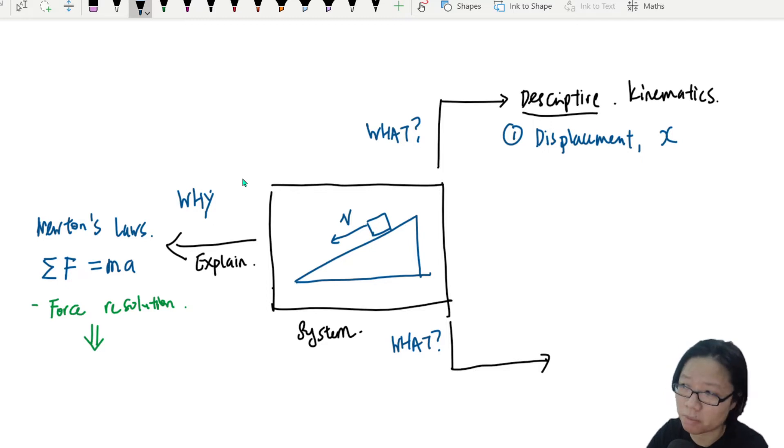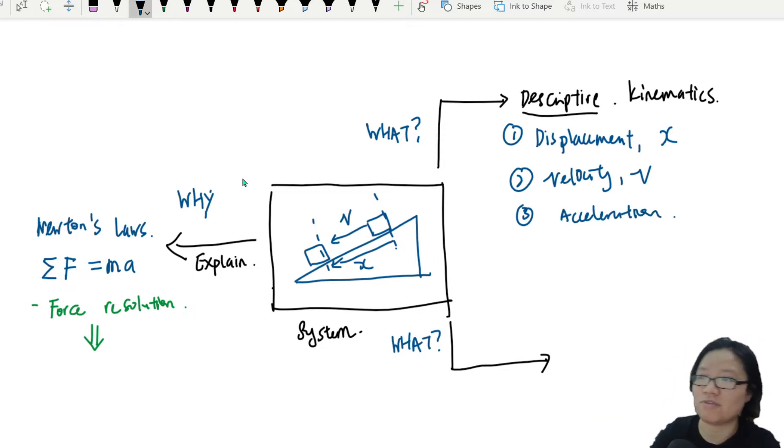So for us right now, maybe I will call displacement x—displacement of the box. Maybe the box travels to this position, so you say here to here is x. Of course, the second one will be velocity, and the third one will be acceleration. So all this you're already familiar with and you know the relationship.